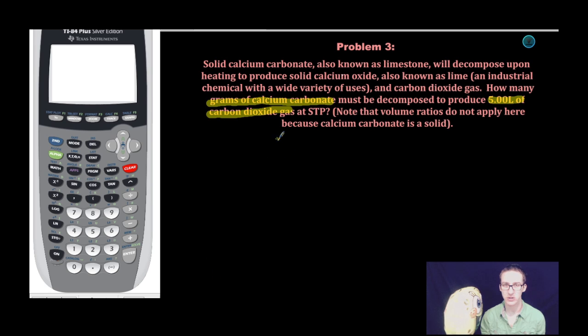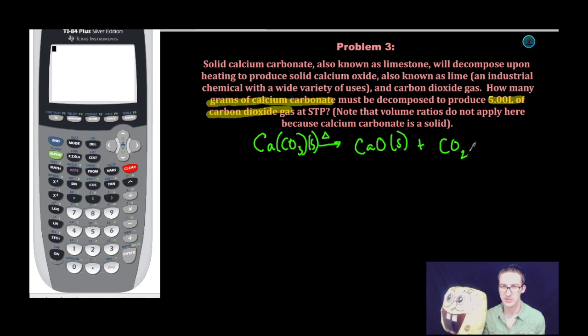Before we start this problem, I need to balance the chemical equation and bust out my nomenclature skills. Calcium carbonate is going to decompose upon heating to produce solid calcium oxide and carbon dioxide gas. Lucky for us, the coefficients are all ones, which means the mole relationships between these things are all one to one to one.